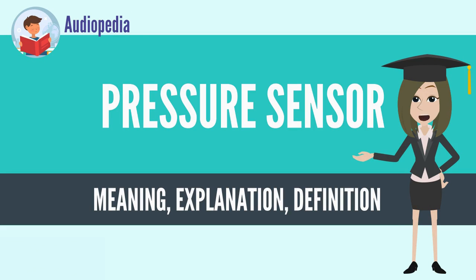A pressure sensor is a device for pressure measurement of gases or liquids. Pressure is an expression of the force required to stop the fluid from expanding, and is usually stated in terms of force per unit area. A pressure sensor usually acts as a transducer; it generates a signal as a function of the pressure imposed. For the purposes of this article, such a signal is electrical.